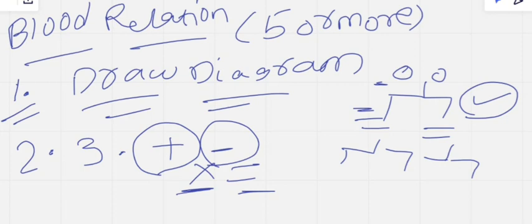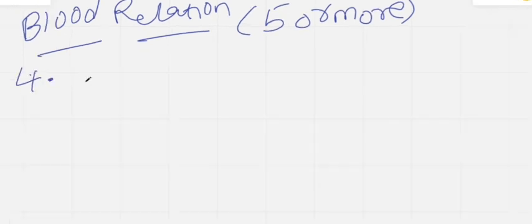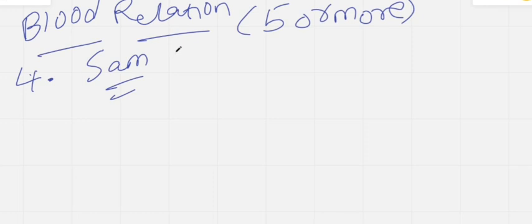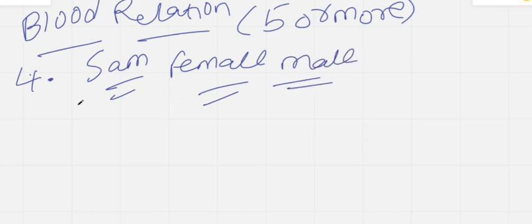The fourth point is: in some questions the data given means gender cannot be decided from the given name. For example, if the question gives the name 'Sam,' you cannot say Sam is female — there is a chance Sam could be male also. So you cannot decide gender based upon the given name.